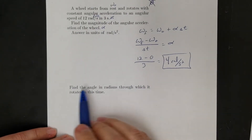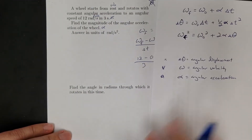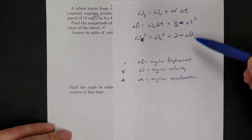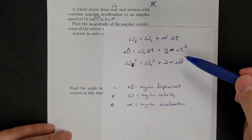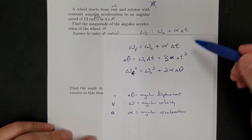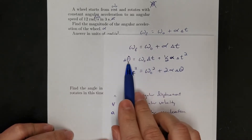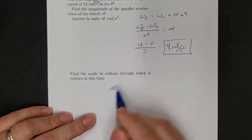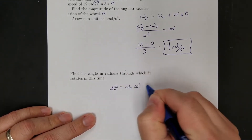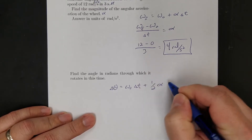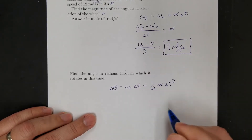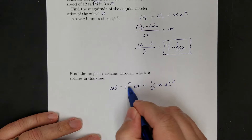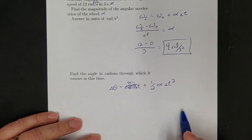Now I want the angle in radians through which it rotates. Angle in radians through which it rotates — that's finding angular displacement, which is theta. Because I know all four of those things, it doesn't matter what equation I use, so I'll pick the one already solved for delta theta: angular displacement equals omega naught times delta T plus one-half angular acceleration times delta T squared. Because my initial angular velocity was 0, this whole first term is 0, so it's basically just one-half alpha T squared.